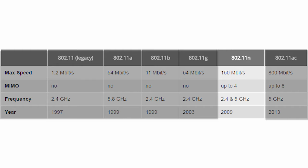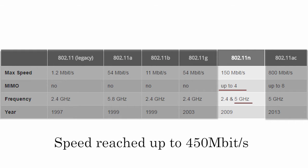Then, in 2009, the N standard introduced the 5GHz band, and also introduced the first use of MIMO antennas for higher parallel throughput. The speed can reach 450 Mbps theoretically, depending on the number of connections.